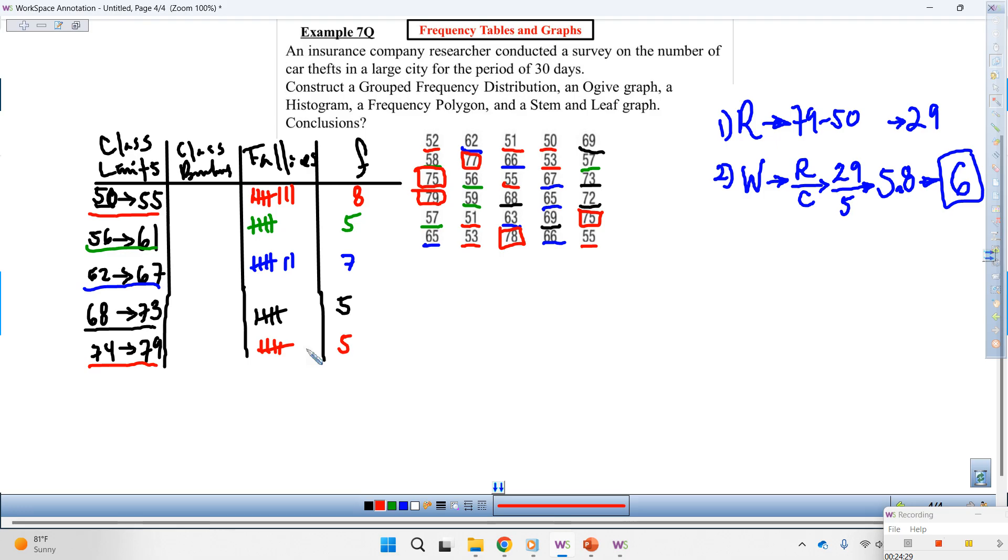So now, I want you to follow along with me. Let's do a stem and leaf to get started. You guys already know how to do the histogram, frequency, polygon, and the ogive. So let's do a stem and leaf. So draw your stem. And right now, I'm starting with the first class. Look up. I'm starting with this one.